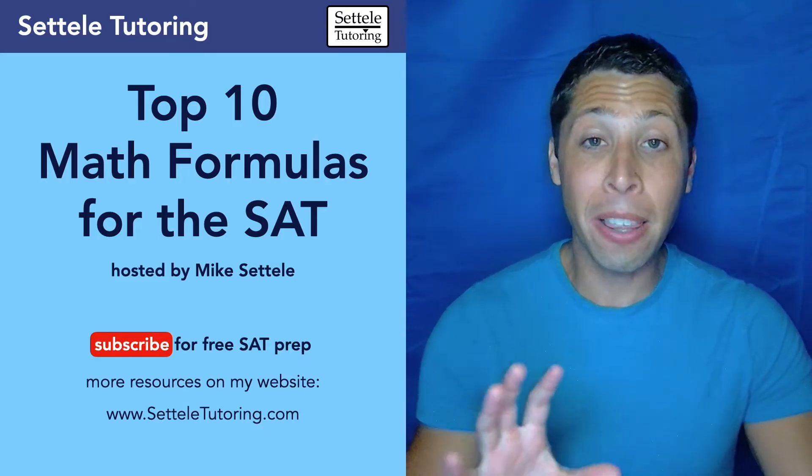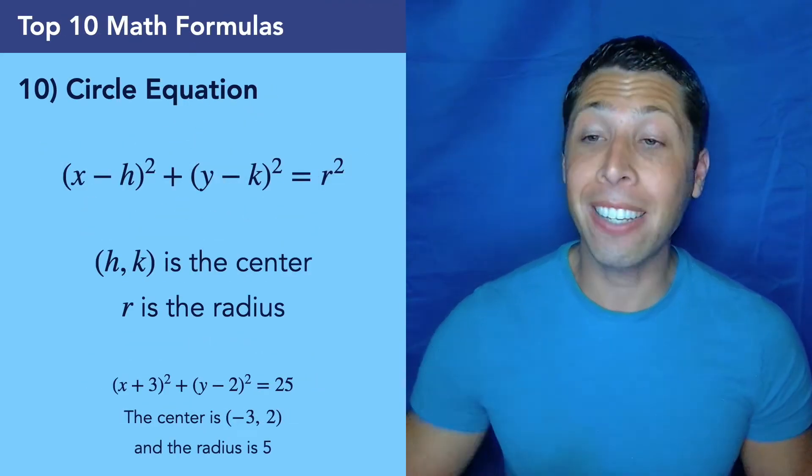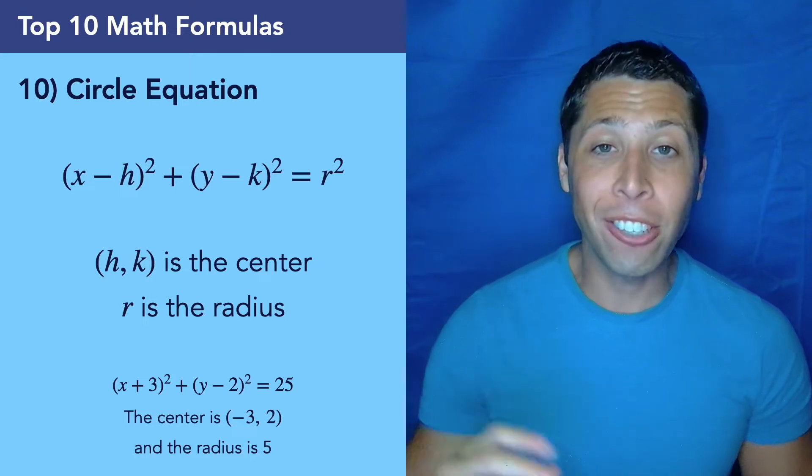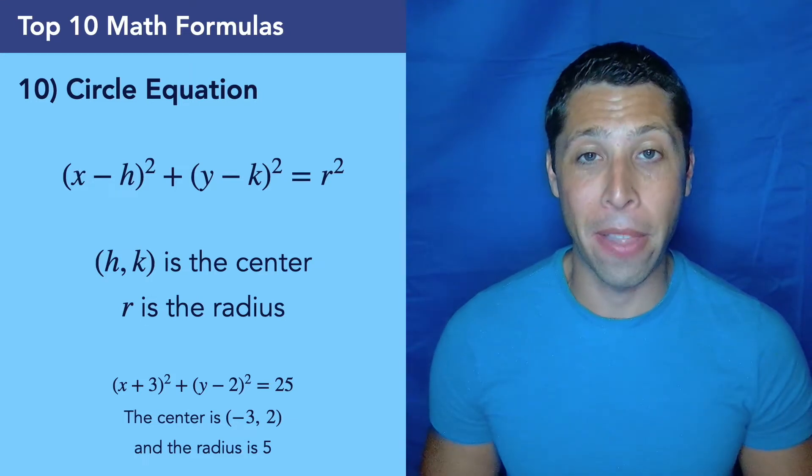But without further ado, let's get into the 10th most important formula. The circle equation, x minus h squared plus y minus k squared equals r squared. h, k is the center, r is the radius, and you can see an example down there.